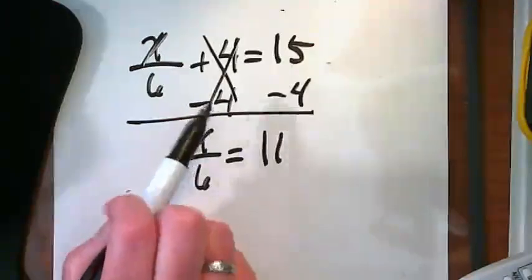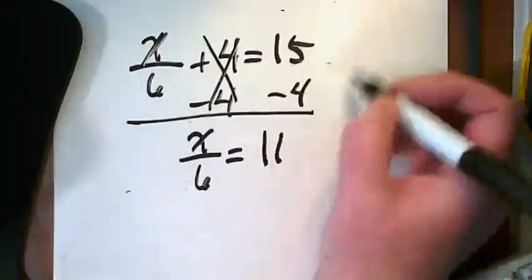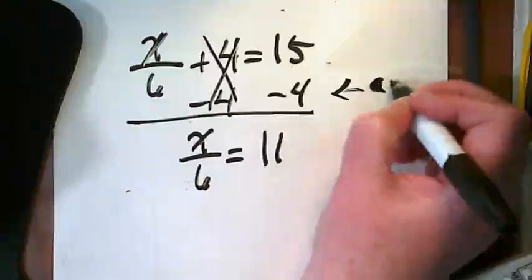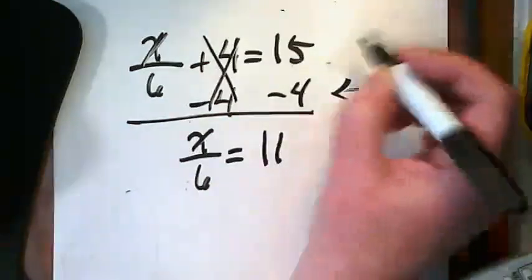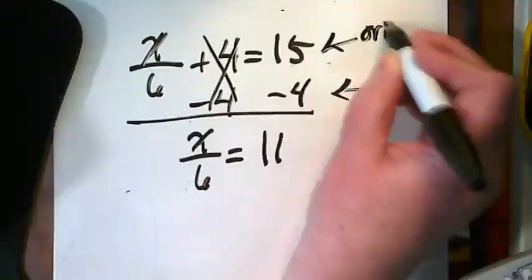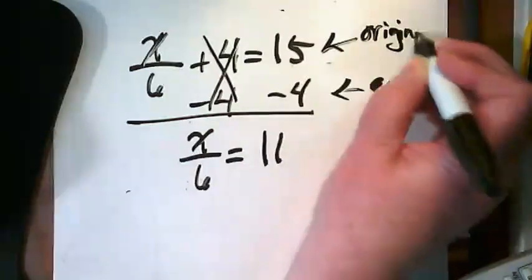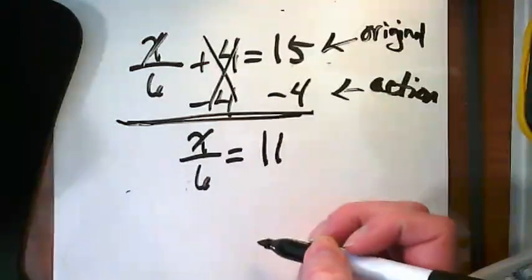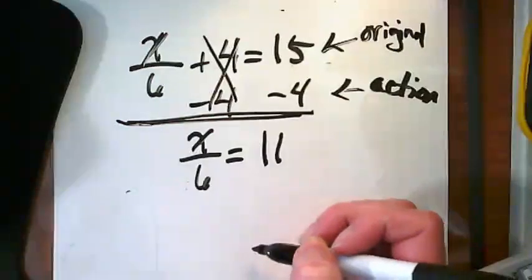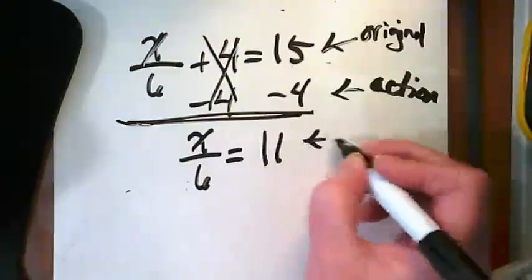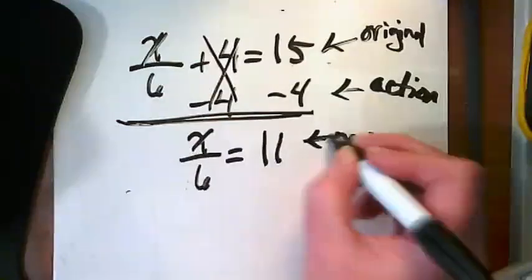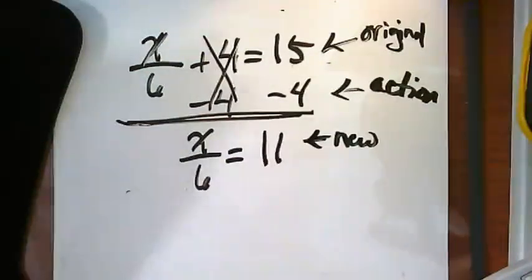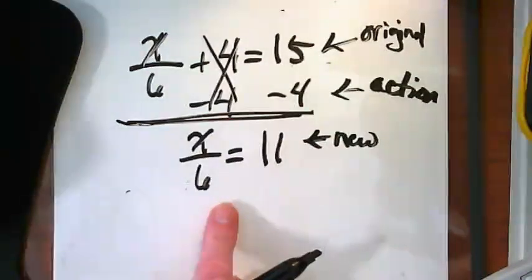I want you to notice every time I'm writing these, I'm showing my action here. Here's the original. And then do you notice I put this line? That's to show what happens after that action. So here's my new version of the equation. And if you notice, it is what that other card was, isn't it?